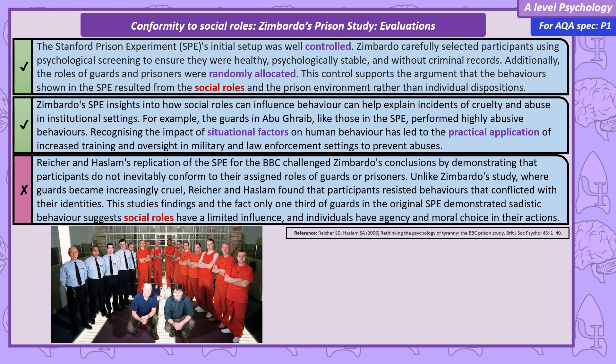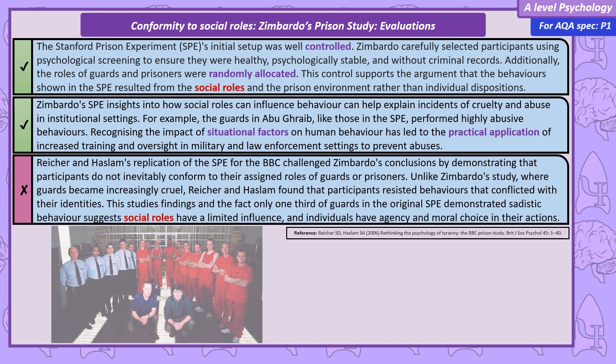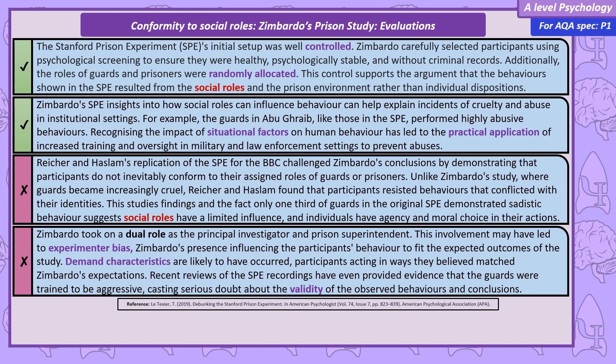So what caused the extreme aggression observed in the Stanford Prison Experiment? A serious criticism of Zimbardo's work is that he took on the dual role of prison superintendent and lead investigator, which likely led to experimental bias. The presence of Zimbardo likely influenced the behaviour of the participants. The prison superintendent interacting with the participants really should have been someone who didn't know the aims of the experiment. The participants likely worked out the aims of the study and acted according to demand characteristics, behaving in a way they thought Zimbardo wanted. Recent analysis of the records of the Stanford Prison Experiment found that Zimbardo and the other researchers directly instructed the guards to be highly aggressive, meaning the conclusion that guards were aggressive due to adapting to social roles is likely invalid.